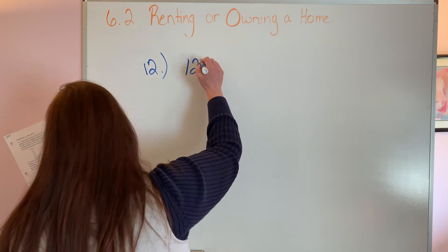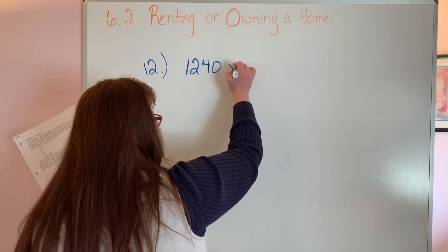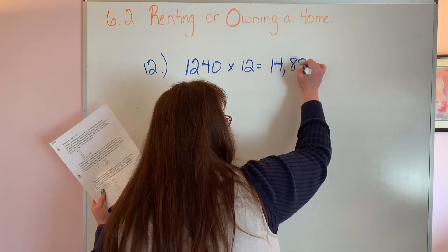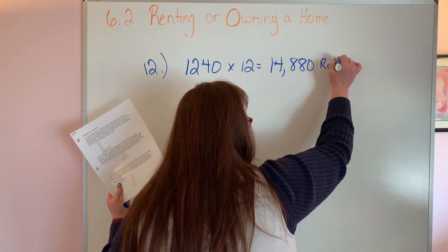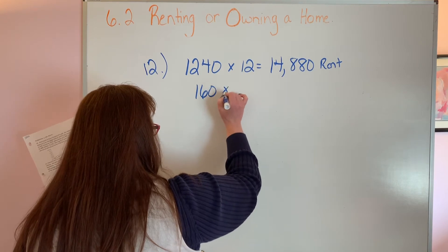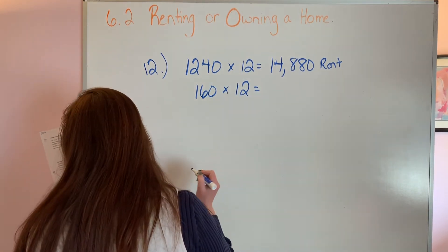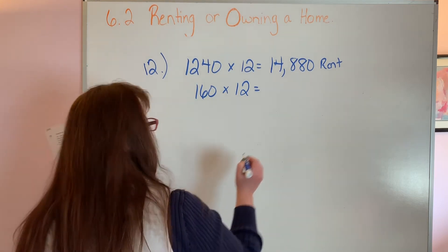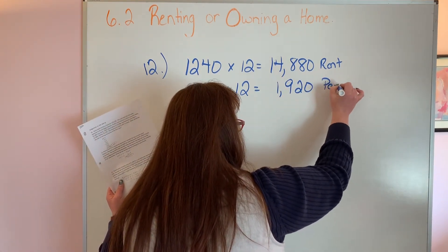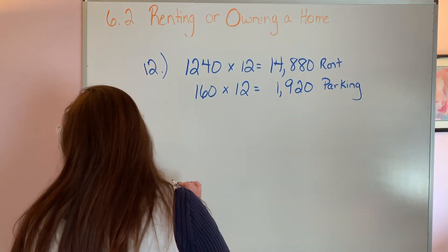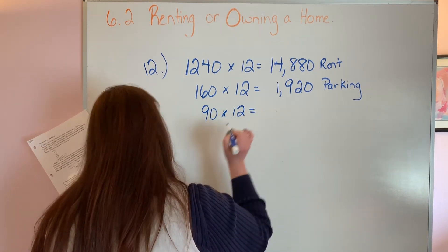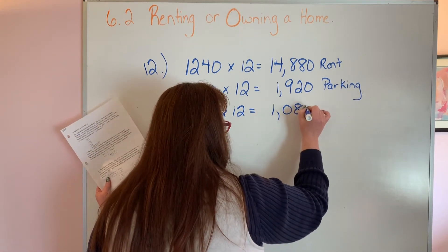First of all, he has his monthly rent, $1,240 times 12 months, that gives him a total rent of $14,880 in rent. Next thing he needs to pay is his $160 for his parking space. Obviously around our town we don't need to pay for parking, but in the big cities they do. $160 times 12, you get $1,920, that's for parking for the year. The electric is $90 a month, so we need to times that by 12, 12 times 90 is $1,080.